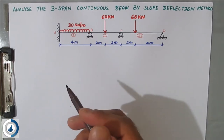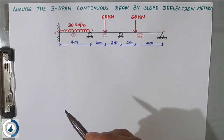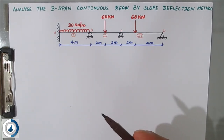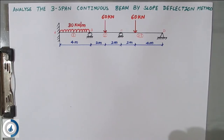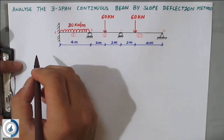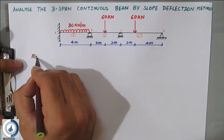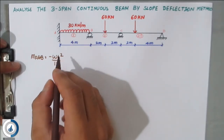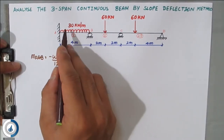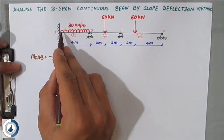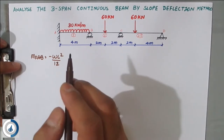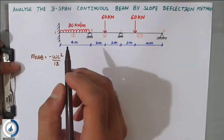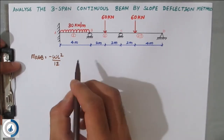The first step in the slope deflection method is to calculate the fixed end moments. I have explained what fixed end moments mean in the previous videos. The first fixed end moment MF_AB is for the UDL, and it is minus wL²/12 — it is anti-clockwise in direction so it is negative. MF_BA will be clockwise so it is positive. The general formula for UDL is wL²/12.